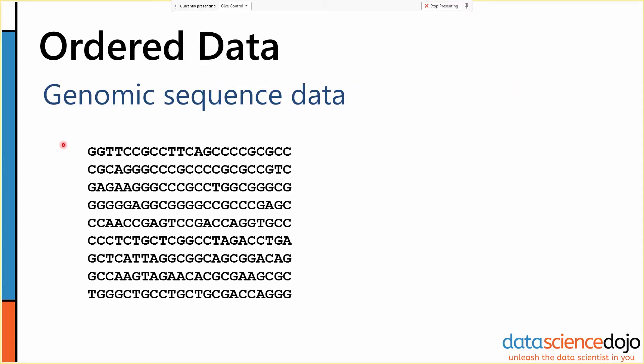The last big category of data is ordered data. Ordered data is data where each data object has to be ordered in some way. In the case of a genomic sequence, for instance, the ordering of our nucleic acids here,